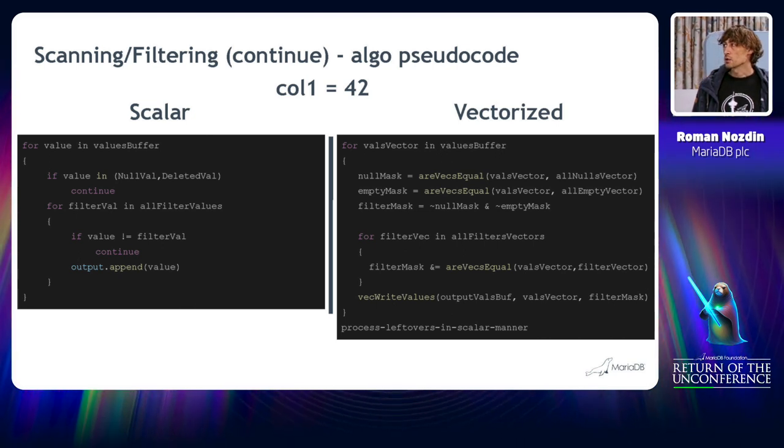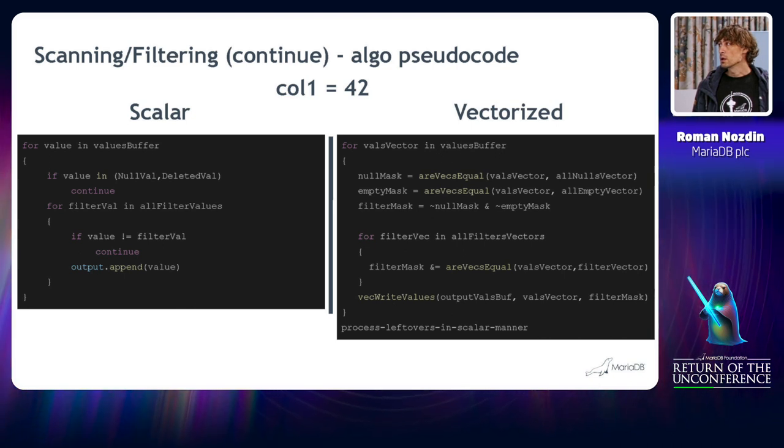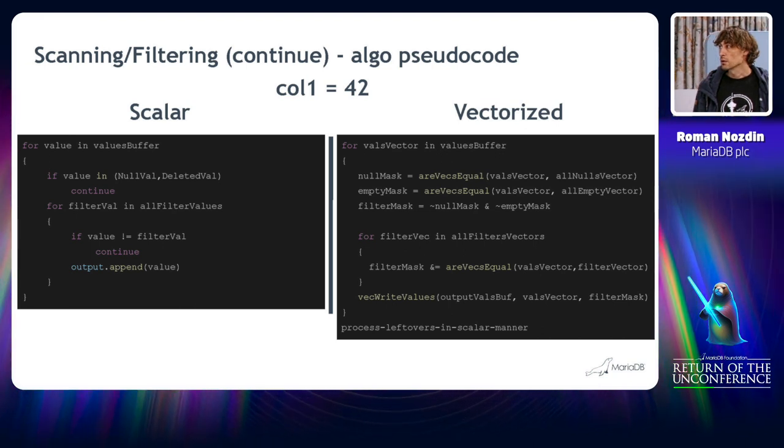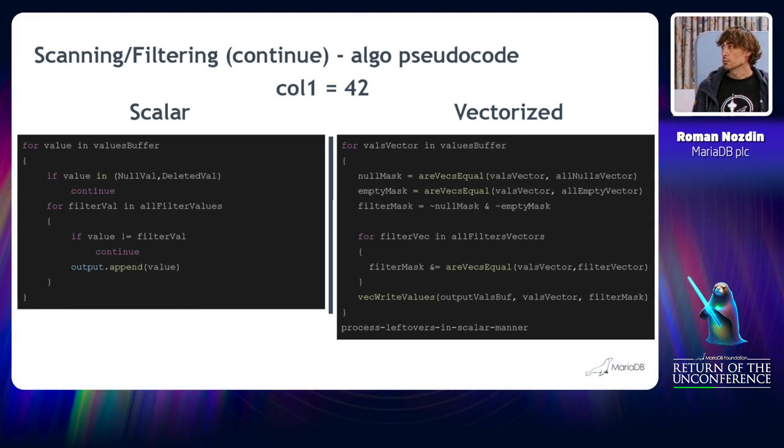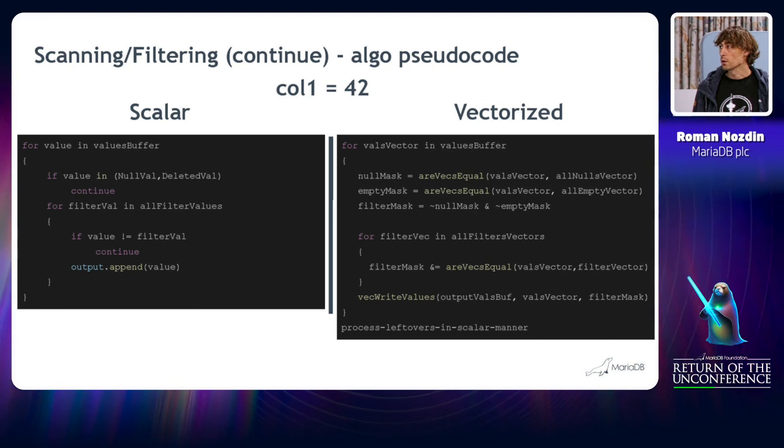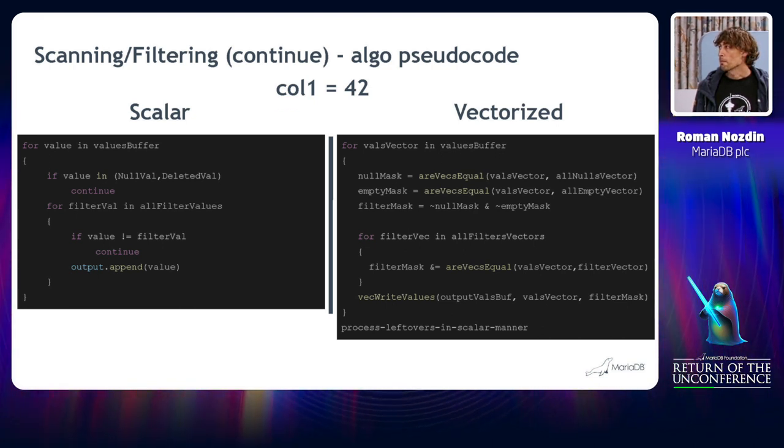After we search for special values, we run a bit operation, bit AND. And we get a filter mask. After filter mask, we iterate over all potential filters. And what does it mean? This argument, filter vector, it's basically a vector that consists of four 42 values. And we compare with the values vector.